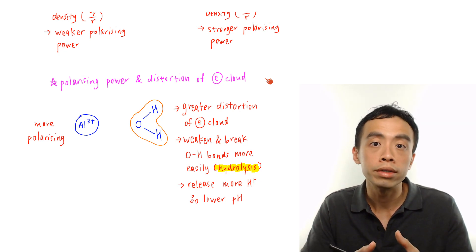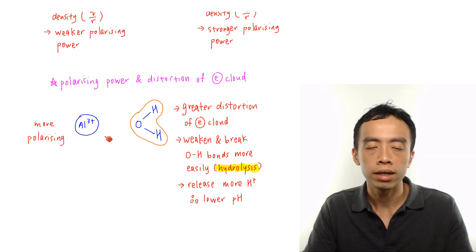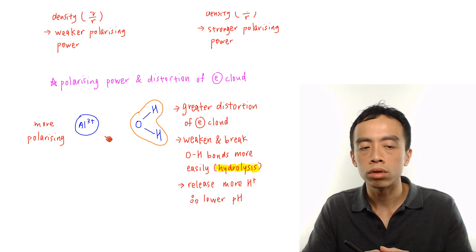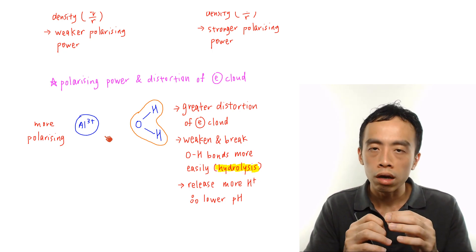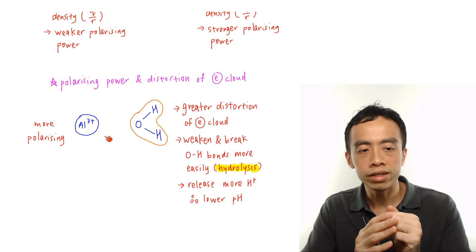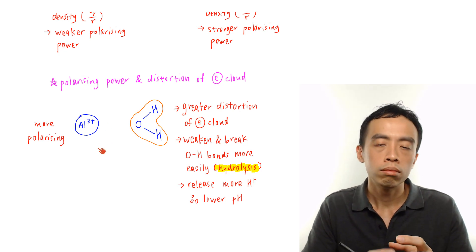Now if I look at Al3+ as an example, because it is the most polarizing of this lot, Al3+ has the highest charge density, so therefore it has a very high charge, a very small size, the charge is very intense, so therefore it is more polarizing.